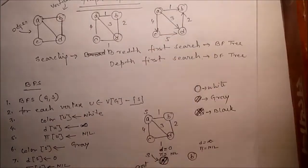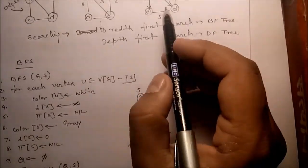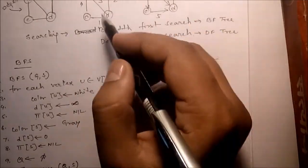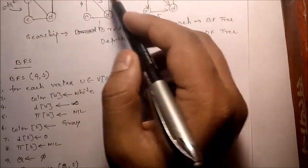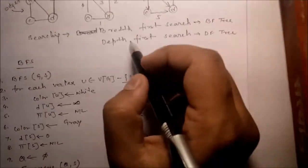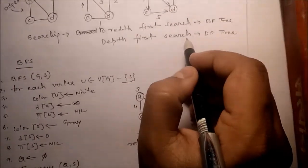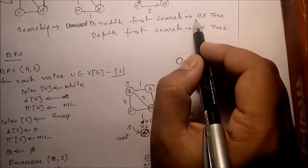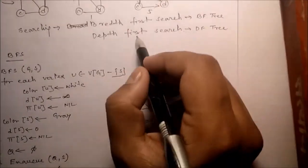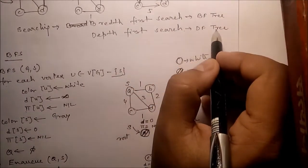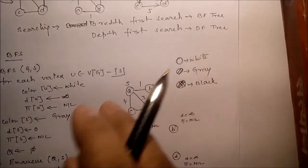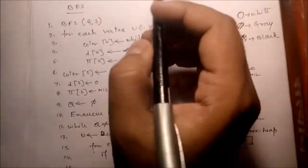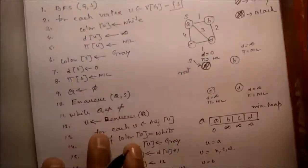Next, searching. To search any node we may apply breadth first search or depth first search. Breadth first search generates a BFS tree and depth first search generates a DFS tree.